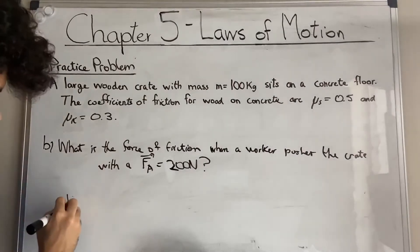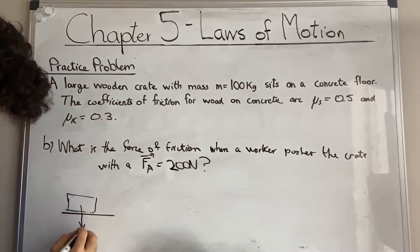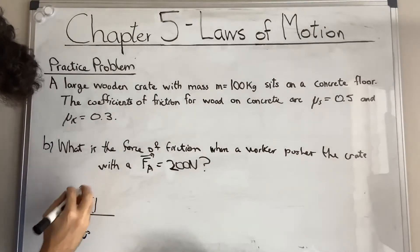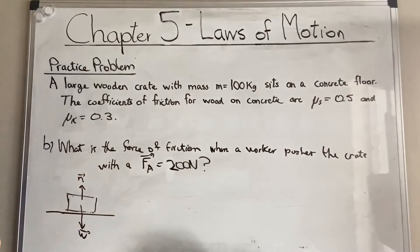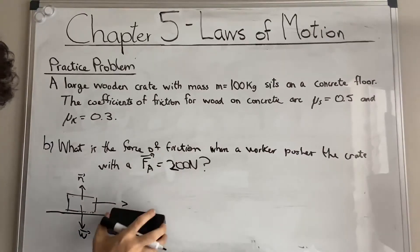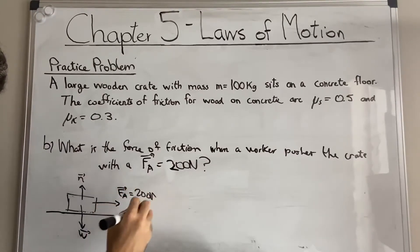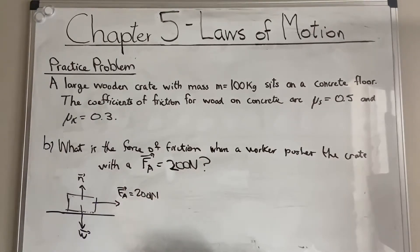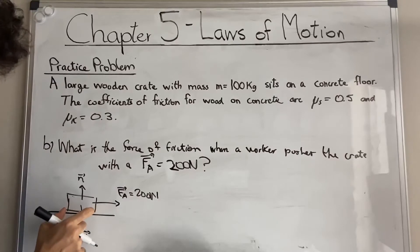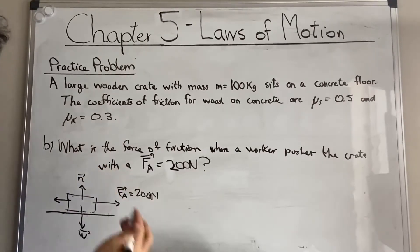We're going to use our force diagram again. Since we have someone pushing on it, it's not only going to have weight and normal force in the y direction, but we're also going to have a force applied. Let's say he's pushing in the positive x direction — that's 200 newtons. In this situation, we know that there is going to be some force of friction, because we're pushing in this direction. Whether this box is going to move or not, there will be some friction trying to resist this push. That's why we call these resistive forces.